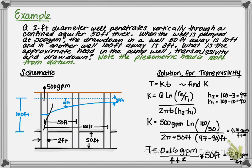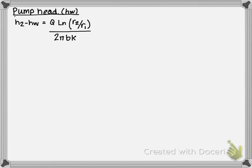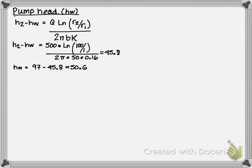The next step in our calculation is to determine the pump head. We can rearrange the flow equation to find the water surface in the pump. We determine that the water surface in the pump is equal to 50.6 feet.